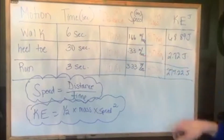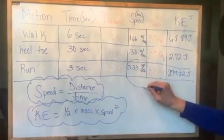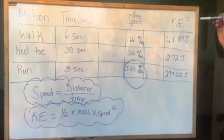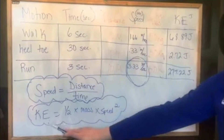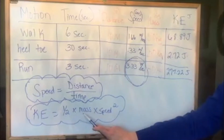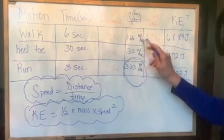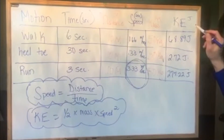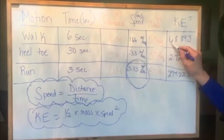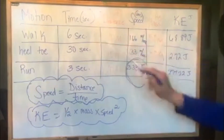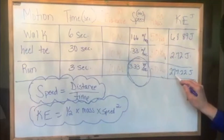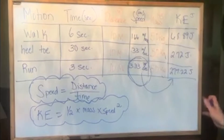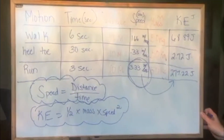So as you can see, my greatest speed is when I was running. We're looking for a relationship between speed and kinetic energy. The kinetic energy formula is: kinetic energy equals one-half times mass times speed squared. Kinetic energy is measured in joules. I got 68.89 joules when I walked, 2.72 joules when I did heel-toe, and approximately 277 joules when I ran. So is there a relationship between kinetic energy and speed? I'm going to pause and let you think about that for a second.